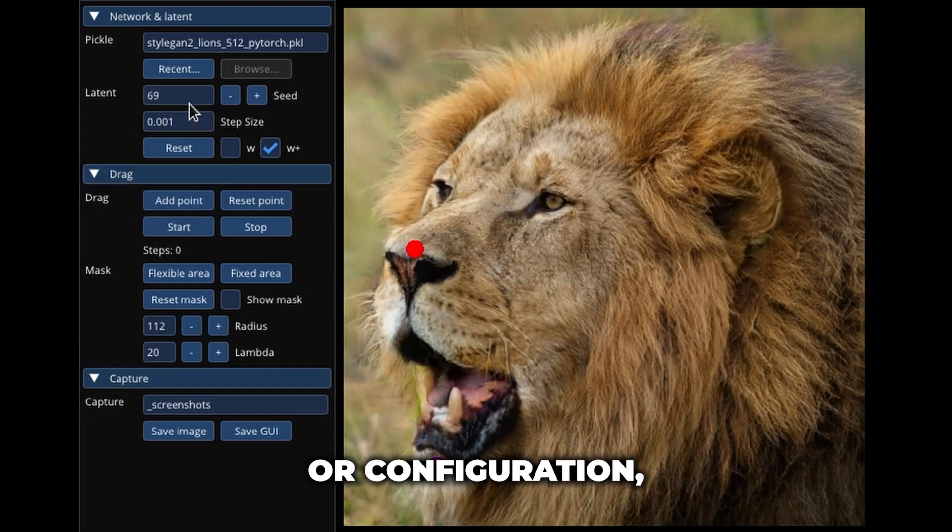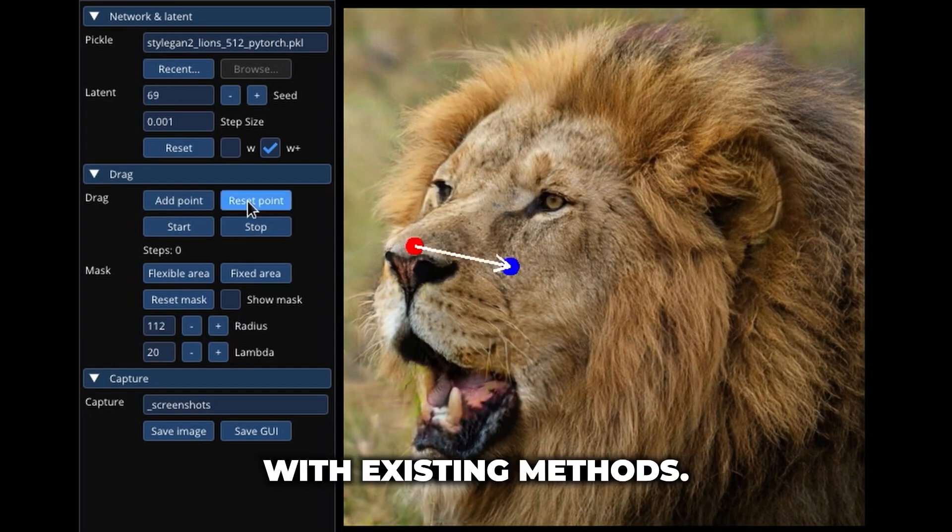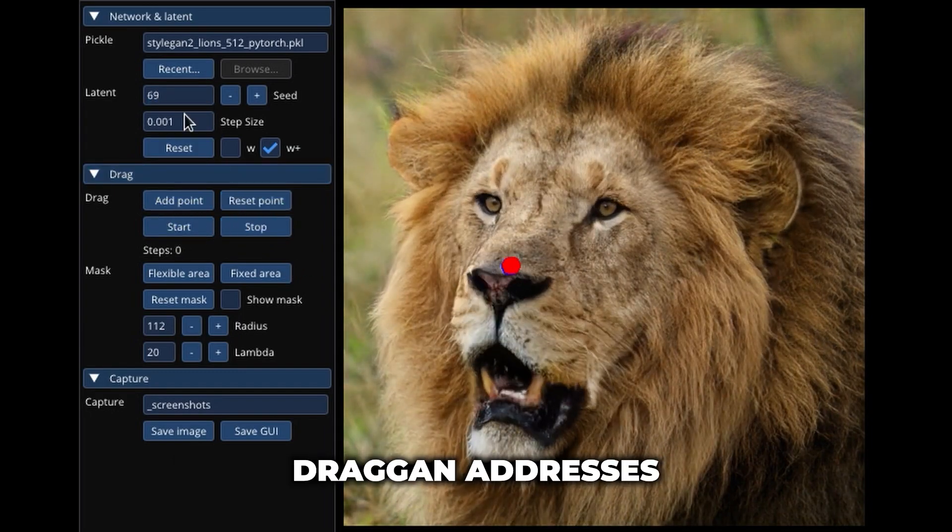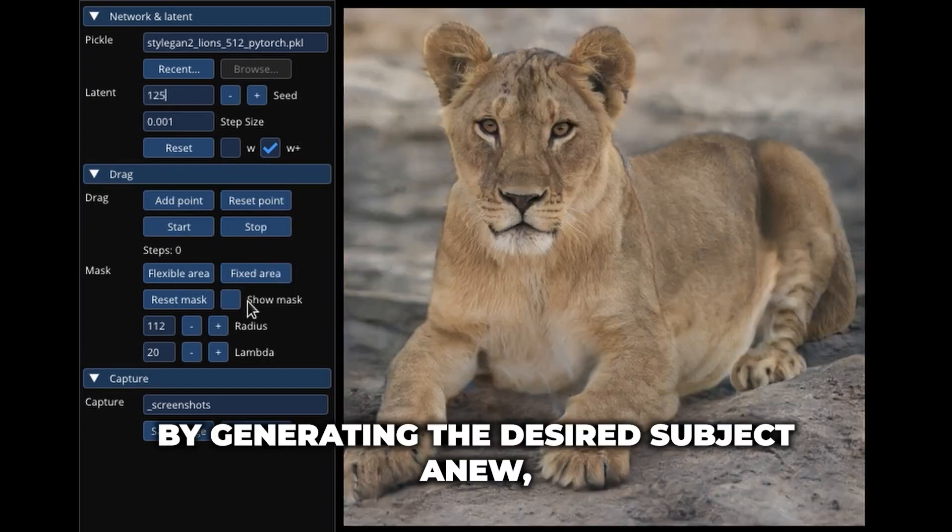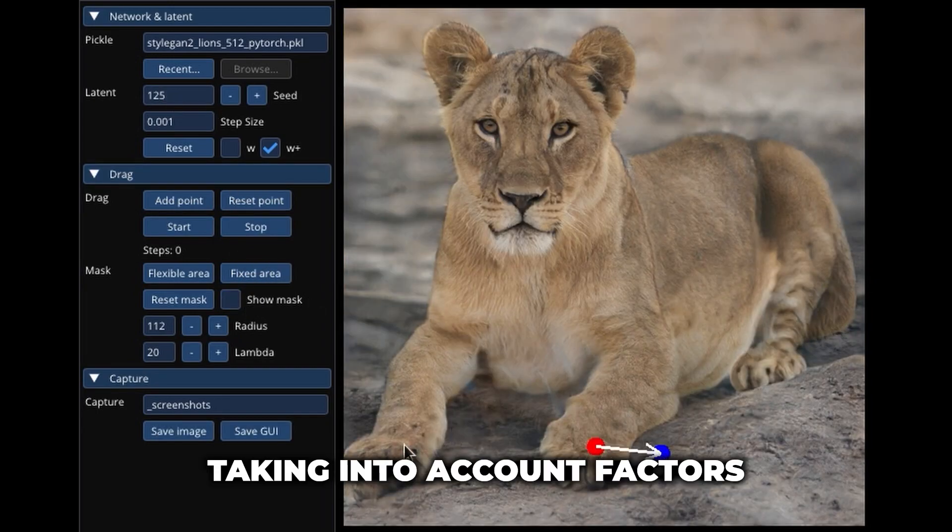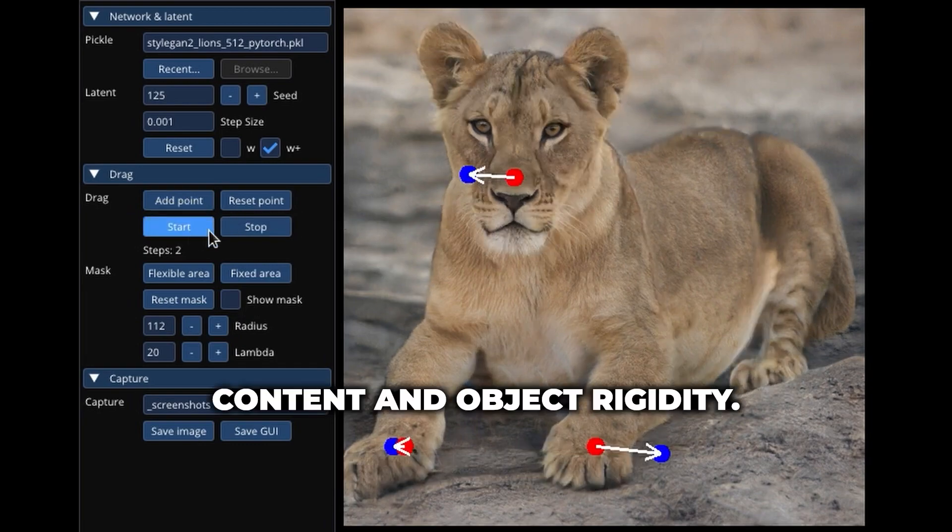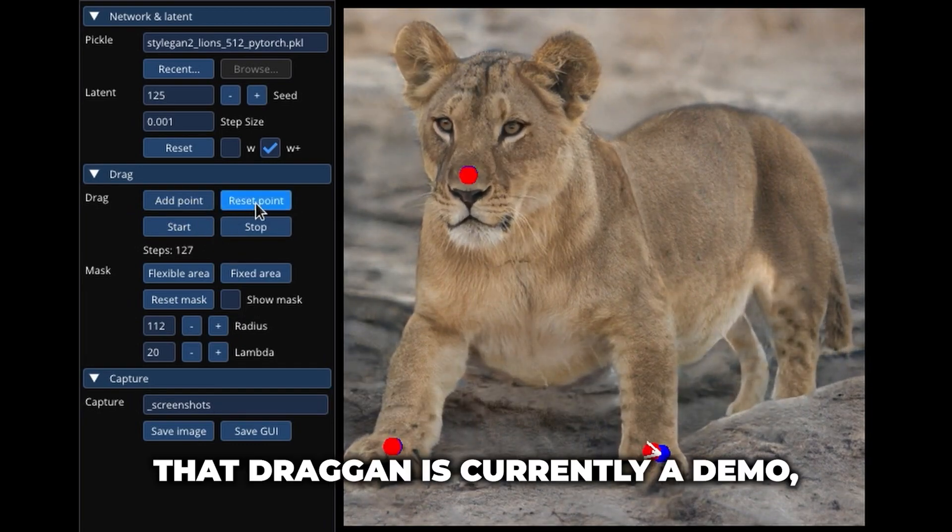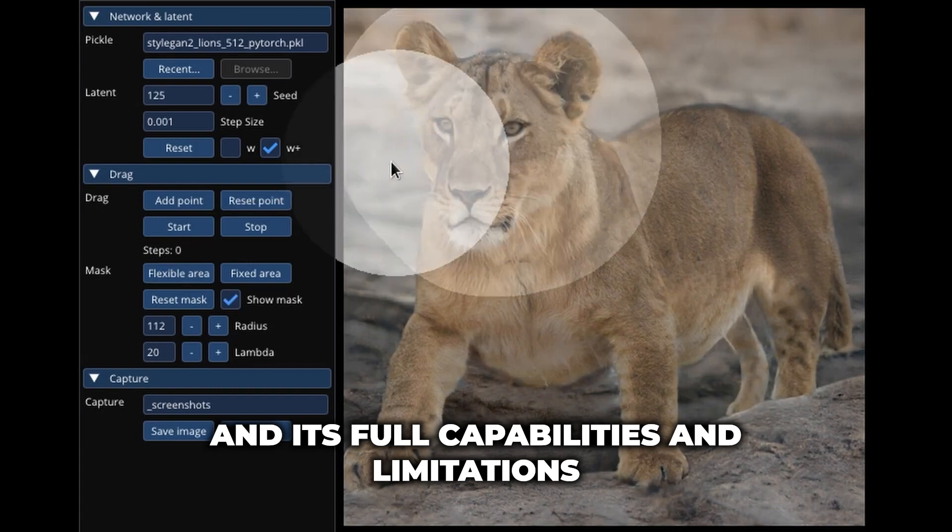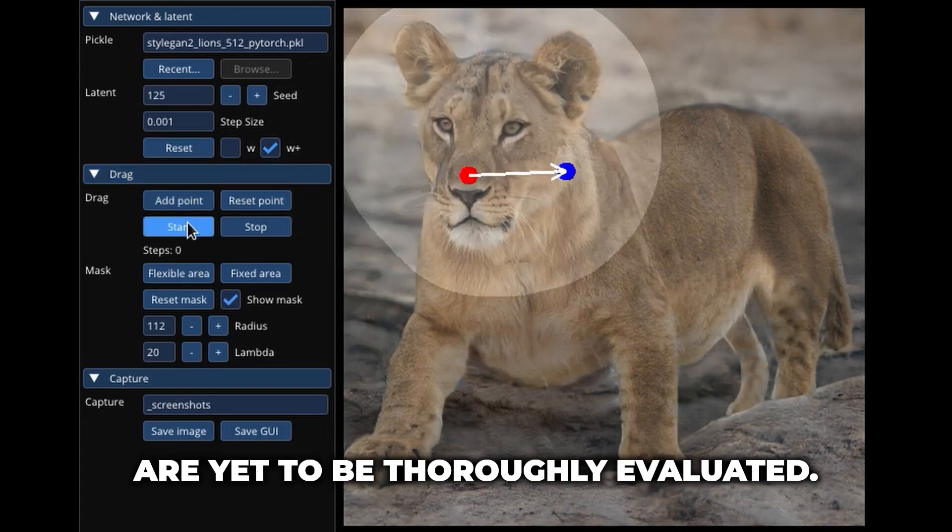If a user wanted a specific pose or configuration, it was difficult to achieve with existing methods. Dragan addresses this limitation by generating the desired subject anew, taking into account factors such as occluded content and object rigidity. The team acknowledges that Dragan is currently a demo and its full capabilities and limitations are yet to be thoroughly evaluated.